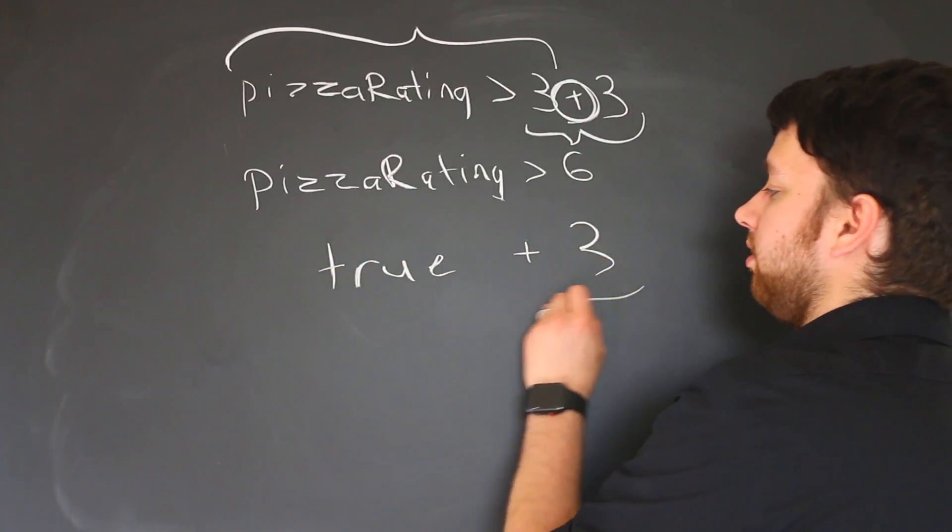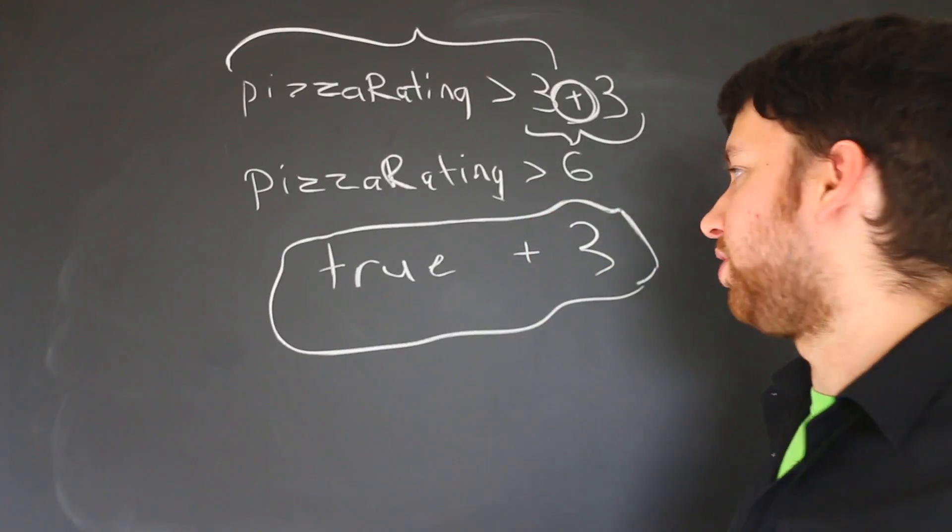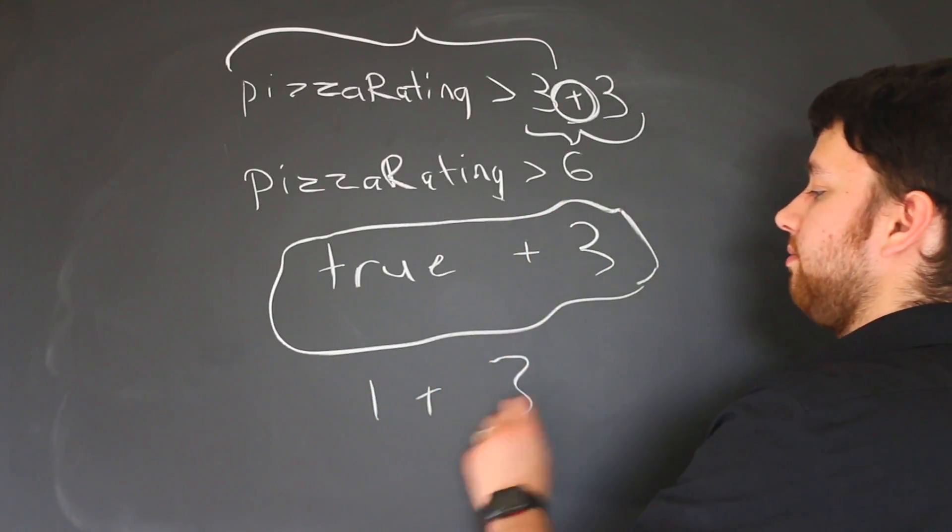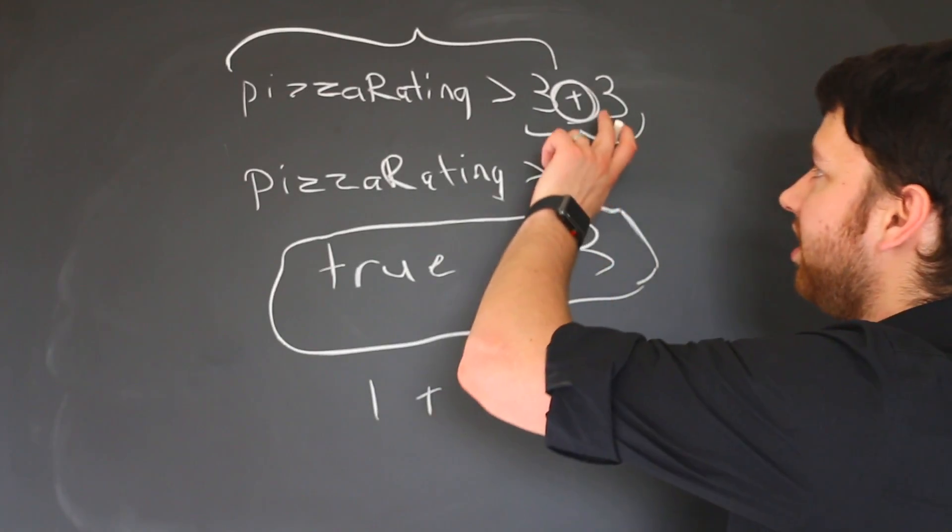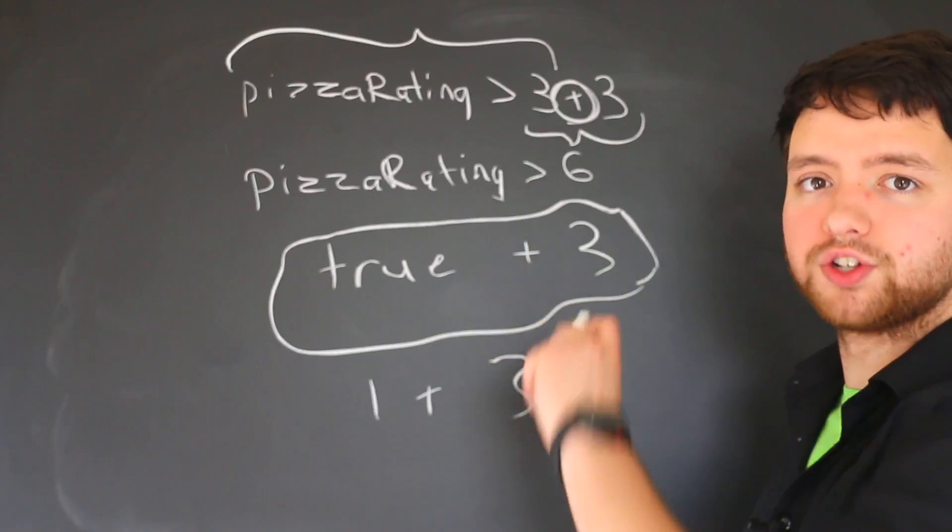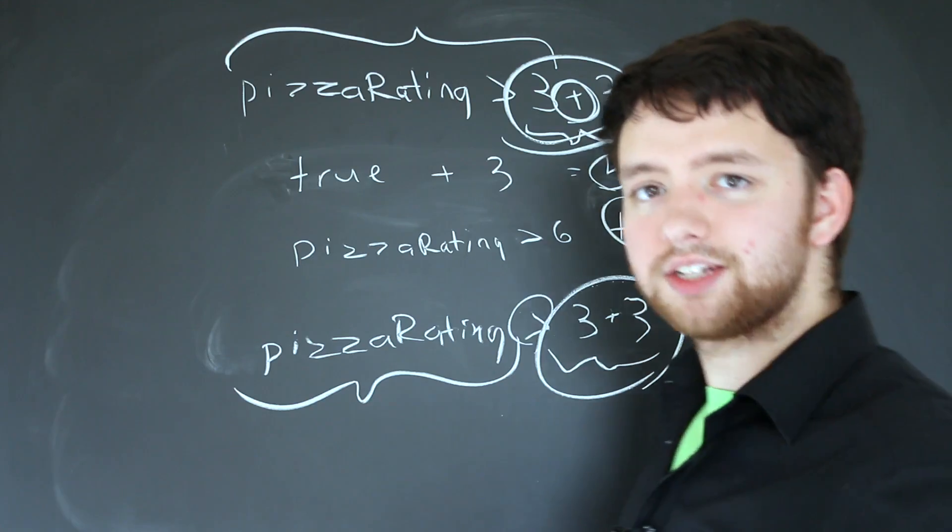And then you had plus three, this doesn't really make a whole lot of sense. I mean, you can think of it as one plus three, but it just doesn't make as much sense to me. It would make sense to do the math operators first and get a value to then compare against.